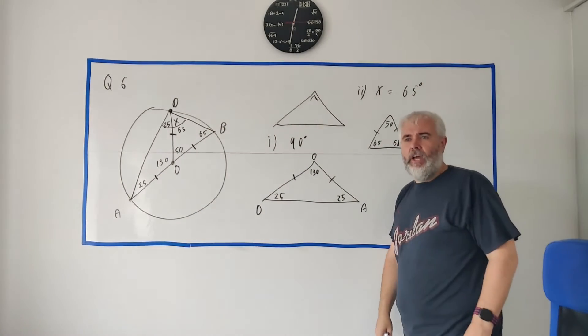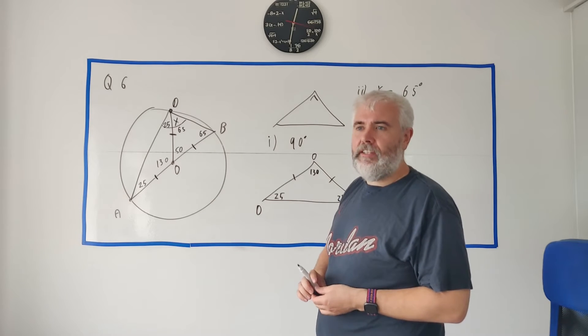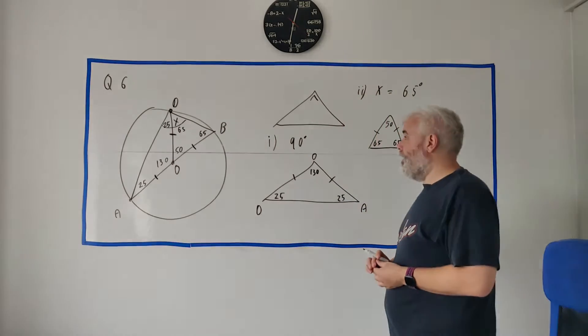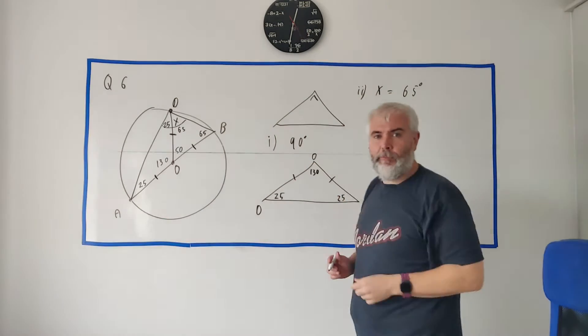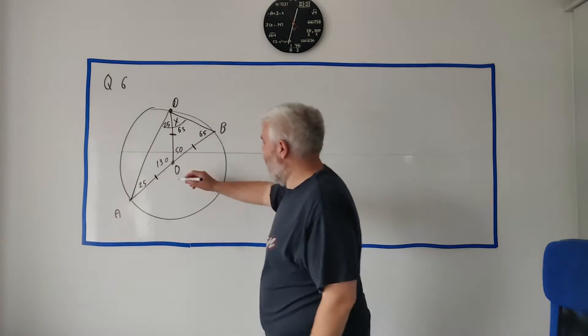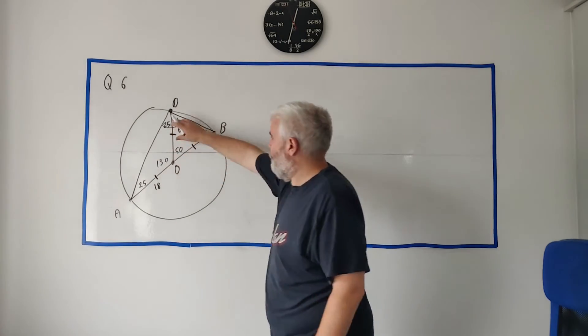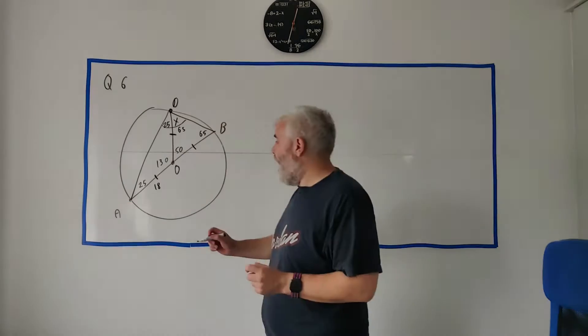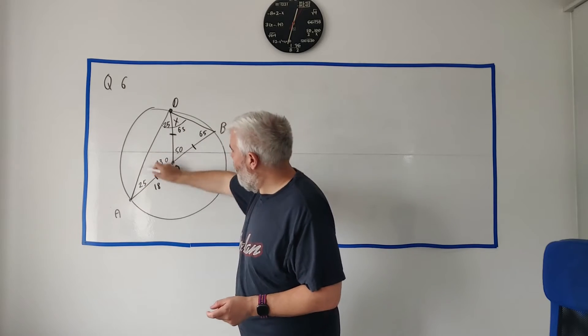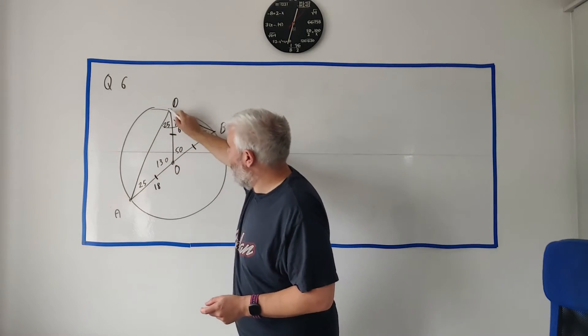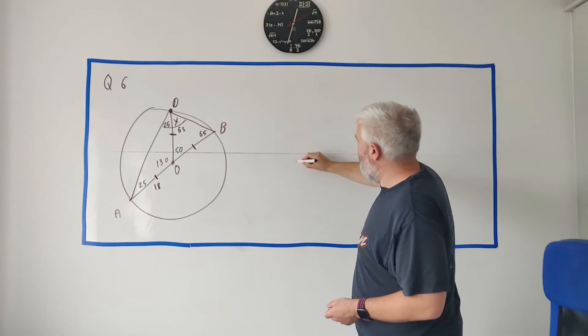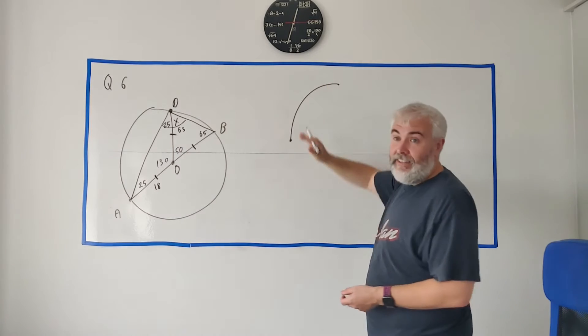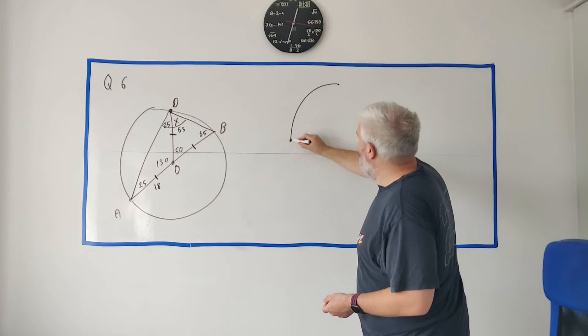Okay, so part 2 also tells us the radius of the circle is 18 cm. Find the length of the arc AD. Let me rub this out so we have a bit more room to play with. So they're telling us that the length here is 18 cm, and so all these radii are 18 cm. And they want us to find out the arc of AD. So A to D, that's a straight line, and the arc is around here. So let me draw that here. A is here, D is here, they want the length of this arc.